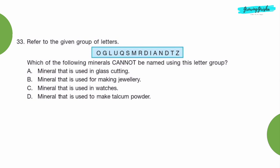Question 33: Refer to the given group of letters. Which of the following minerals cannot be named using this letter group? Option D, mineral that is used to make talcum powder.